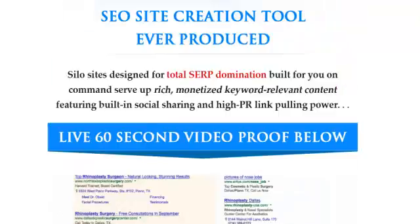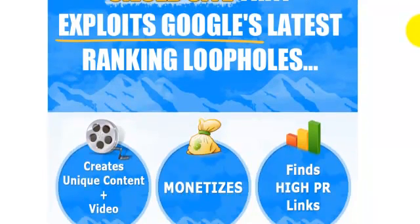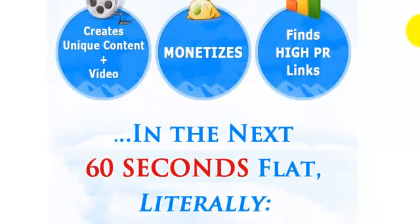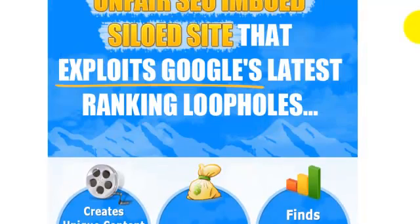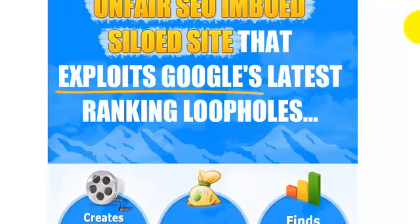Alex Becker of Source Wave created a product called SEO Zen. What this product does is automate the process of creating these siloed sites. It creates content, helps you monetize it, and finds high PR links for you so that you can link to your siloed site — and it does this in minutes.